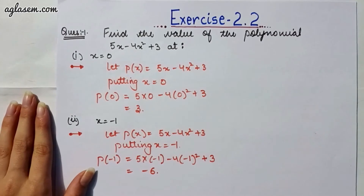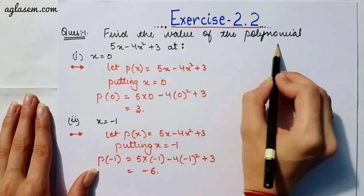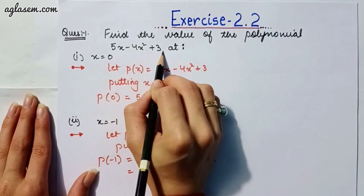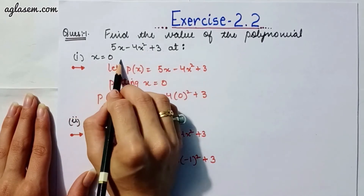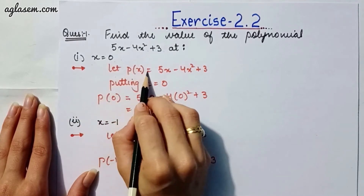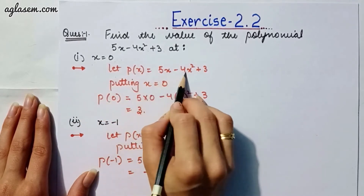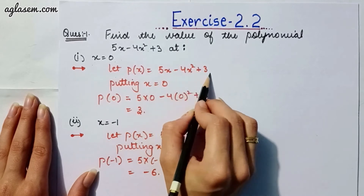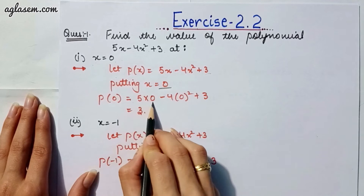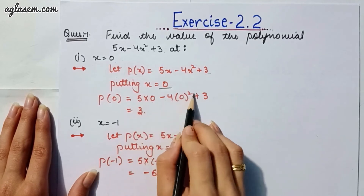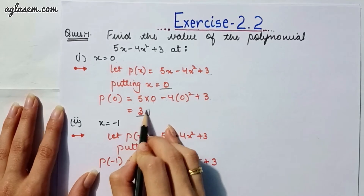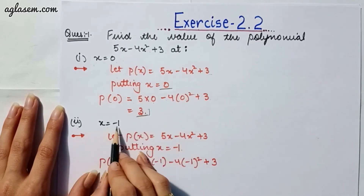Our first question says: find the value of the polynomial 5x minus 4x² plus 3. First, we let p(x) = 5x - 4x² + 3. For x = 0, by putting the value 0: 5×0 minus 4×0² plus 3, we get the answer 3.